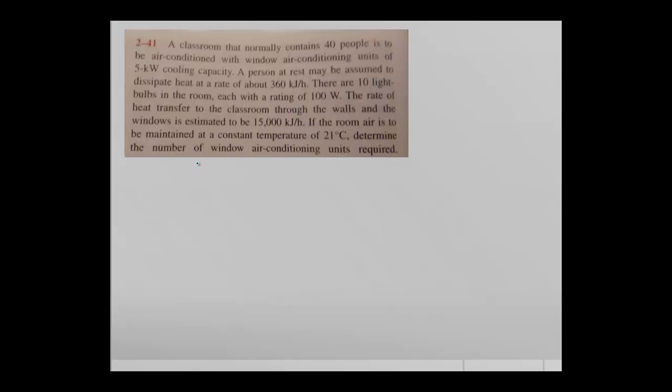In this video we are going to do a quick calculation involving different units, specifically to help us deal with combinations of units. We have a classroom that contains 40 people and we need to air condition this room. We are allowed to buy 5 kW cooling capacity air conditioning units, and we have three loads: loads from people, from lighting, and through the walls.